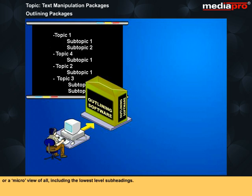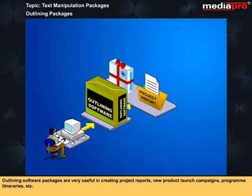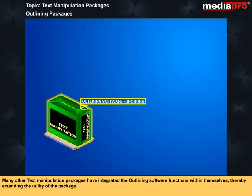Or a micro view of all, including the lowest-level subheadings. Any level of heading can have an associated paragraph of text that may detail the body matter under the heading. Outlining software packages are very useful in creating project reports, new product launch campaigns, program itineraries, etc. Many other text manipulation packages have integrated the outlining software functions within themselves, thereby extending the utility of the package.